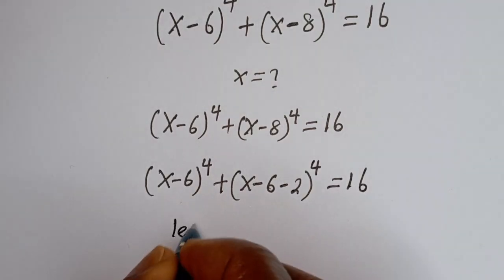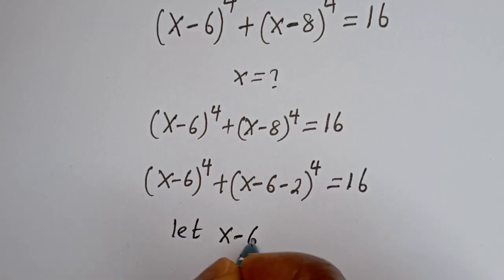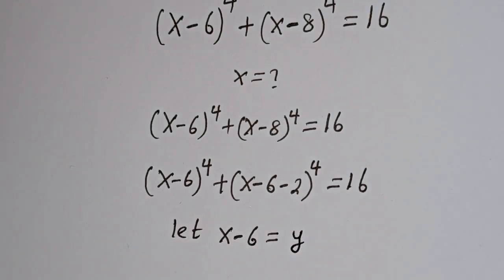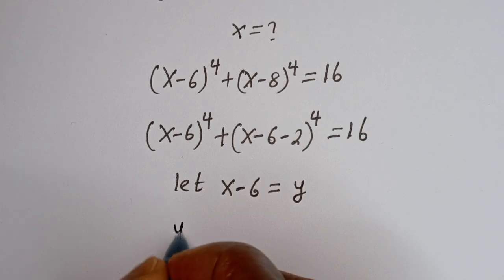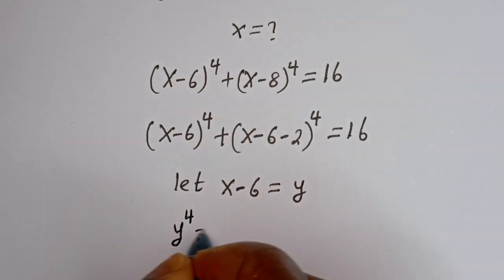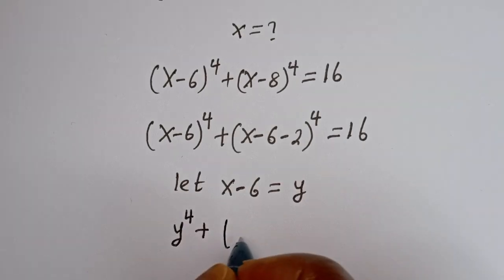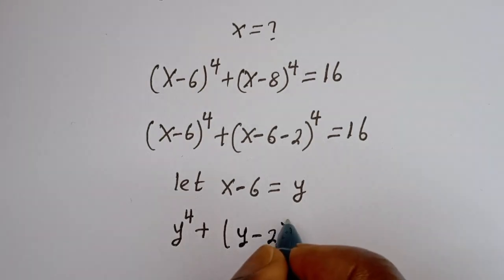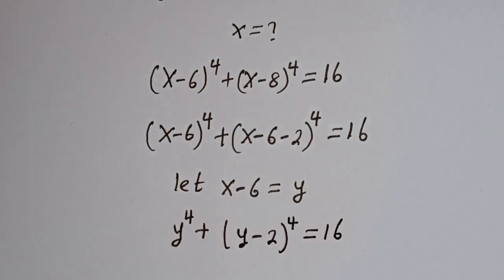Let x minus 6 equal to y. Then we have y to the power of 4 plus (y minus 2) to the power of 4 is equal to 16.